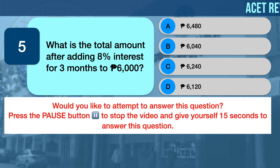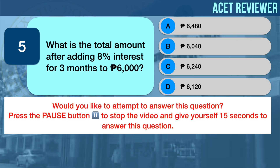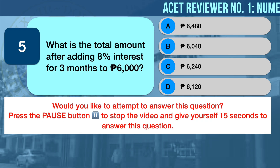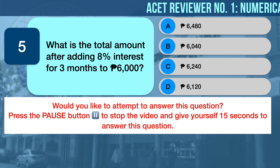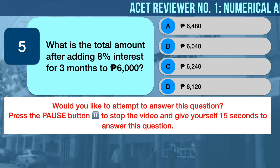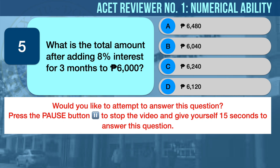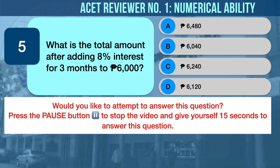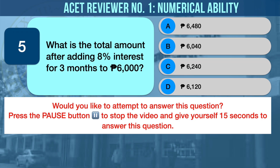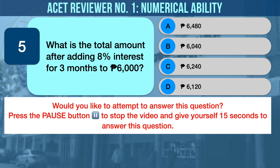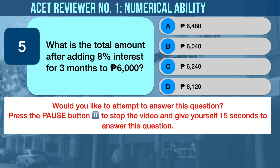Numerical Ability Problem Number Five: Business Math. What is the total amount after adding 8 percent interest for three months to 6,000 pesos? A) 6,480 pesos.